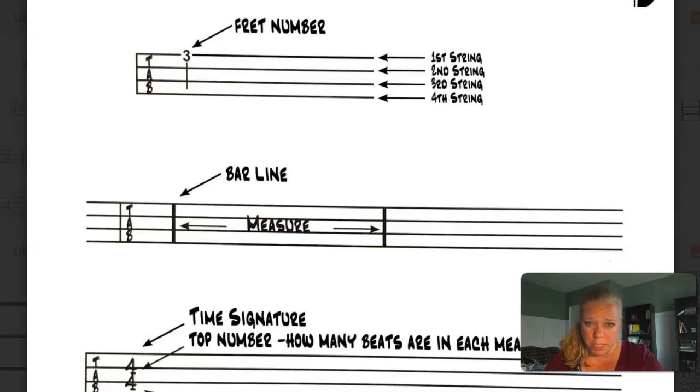Sometimes kids get really confused because those four strings look like maybe they could be four lines on a treble clef staff. But remember, the treble clef staff has five lines and four spaces. So don't get them confused.